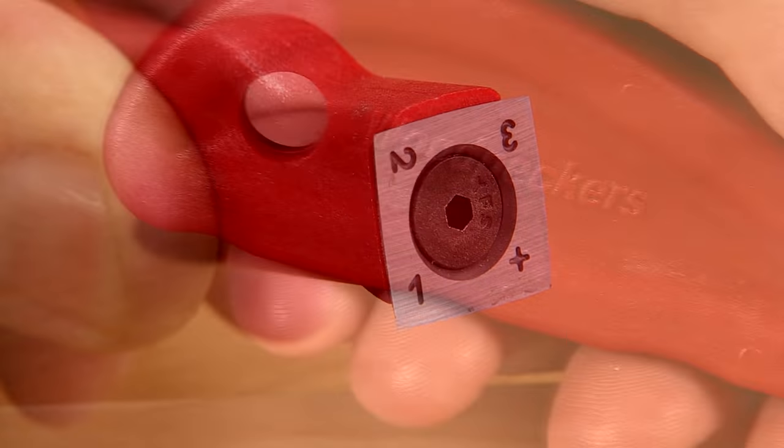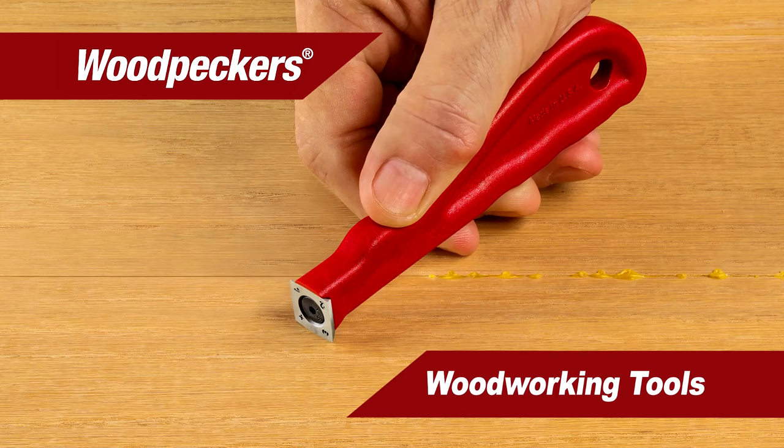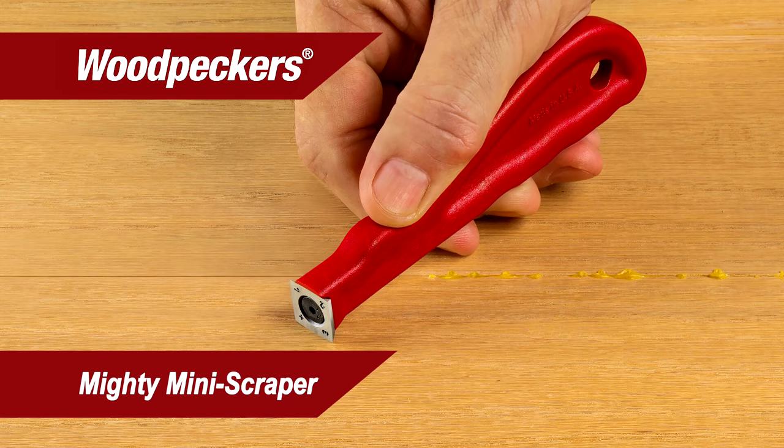Simply fasten a carbide insert to the end of a comfortable handle and voila, you have Woodpecker's newest tool, the Mighty Mini Scraper.